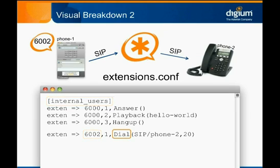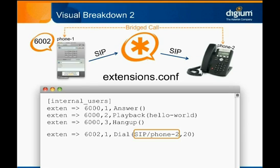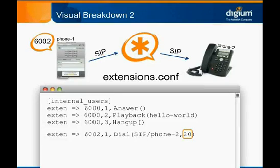This will dial the endpoint that is specified in the arguments contained within the parentheses, a SIP phone with the name Phone-2. If the phone is answered, these two channels are bridged and will remain this way until the call is hung up or transferred. If the phone is not answered and the timeout specified as the second argument passed to dial is met, our call will exit the Dial application and because there are no further priorities to execute, the call will be hung up.